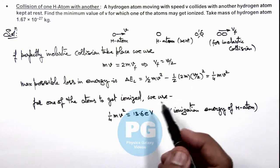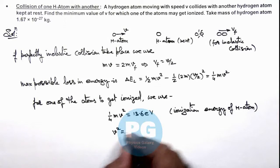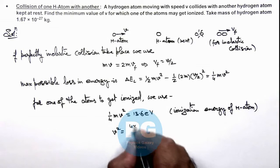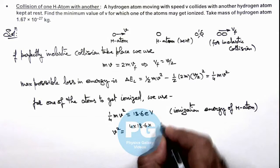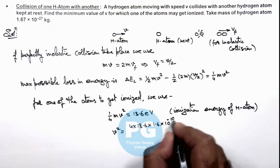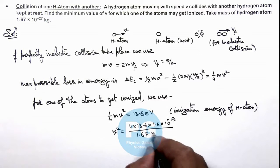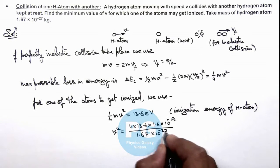This is ionization energy. Now in this analysis we'll get the value of v² is 4 × 13.6 × 1.6 × 10⁻¹⁹ divided by the mass of hydrogen atom we are given as 1.67 × 10⁻²⁷ kg.